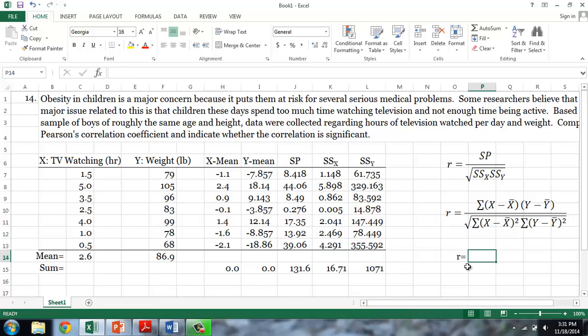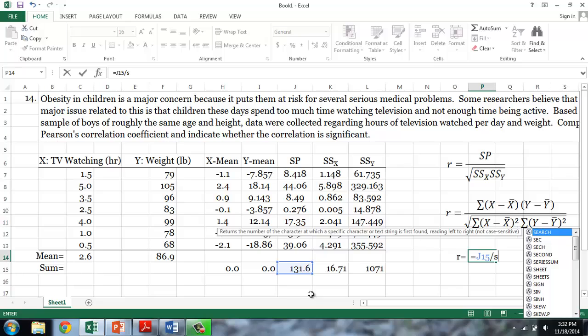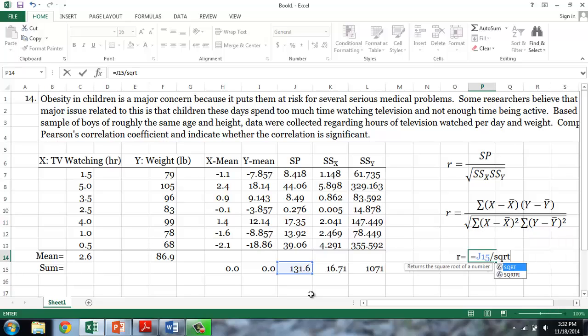Now we can calculate our correlation coefficient. R is equal to the sum of the product of the deviations divided by the square root, or sqrt, parentheses, of the sum of squared deviations for x, times the sum of squared deviations for y, close parentheses. This gives us a result of 0.98.